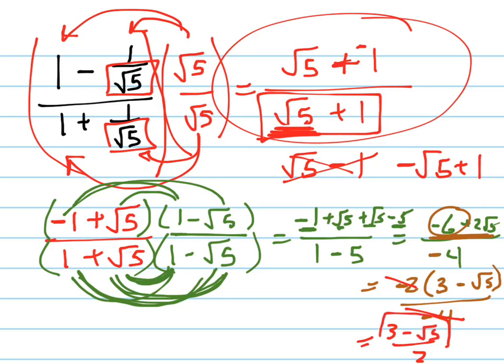Now, your answer, they might want it in standard form, which would be distribute the 2, which would be 3 halves minus root 5 over 2. And that's your answer.